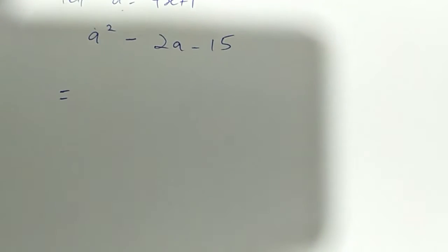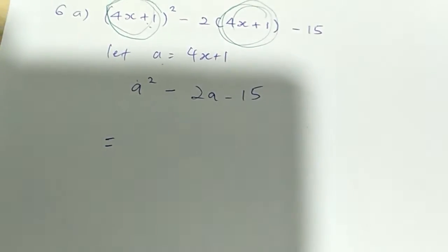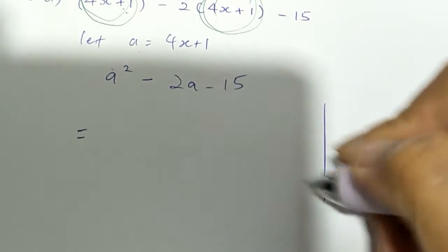there's 3 ways to factorize: take out common factor, use special products or use cross method. And this is a quadratic expression. So obviously we need to use cross method.